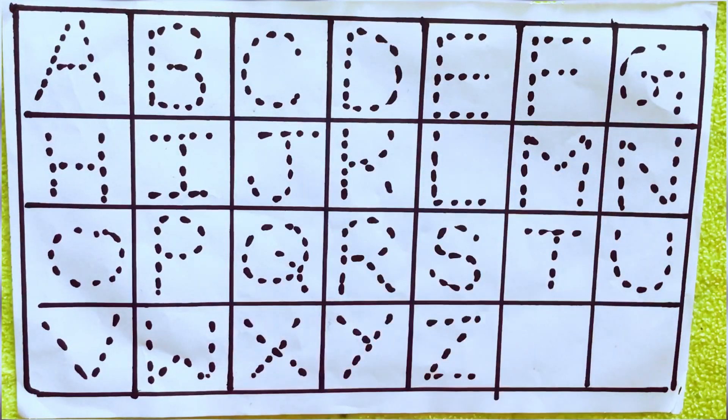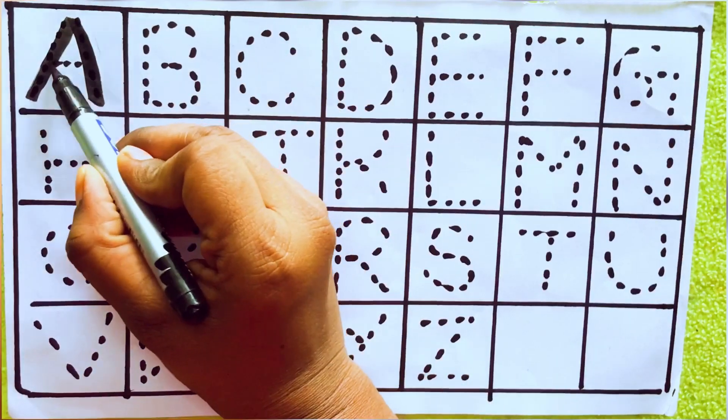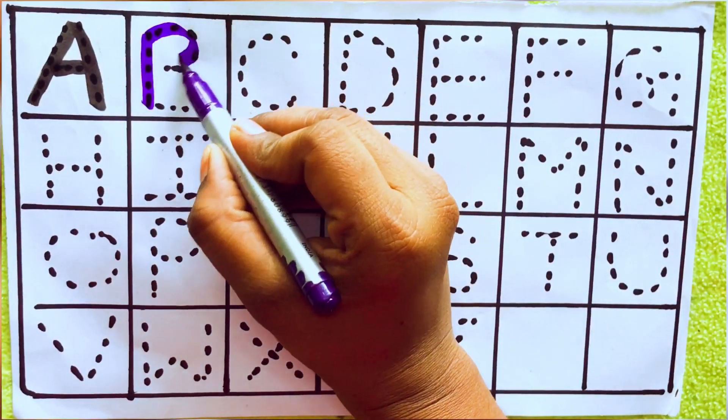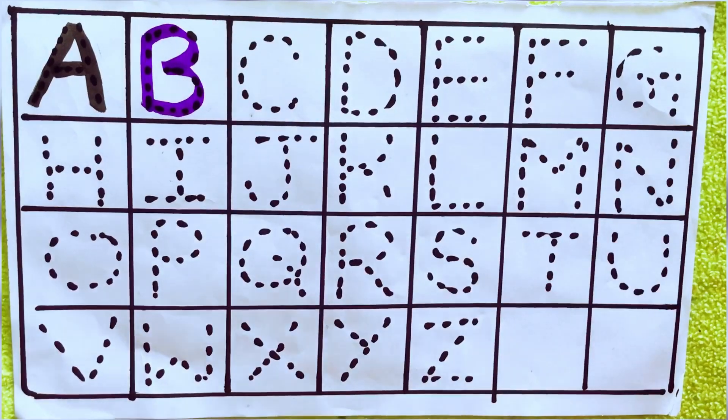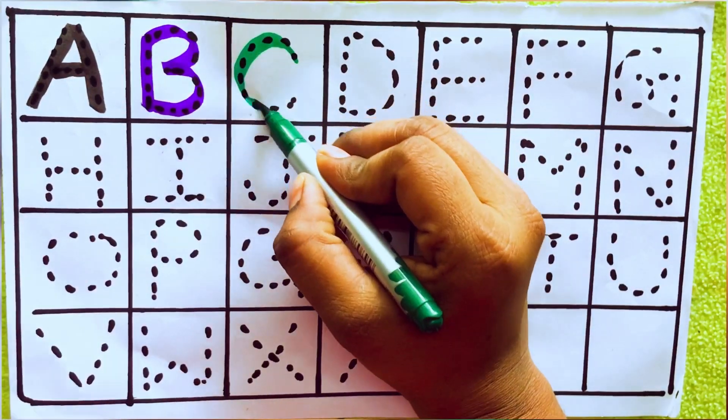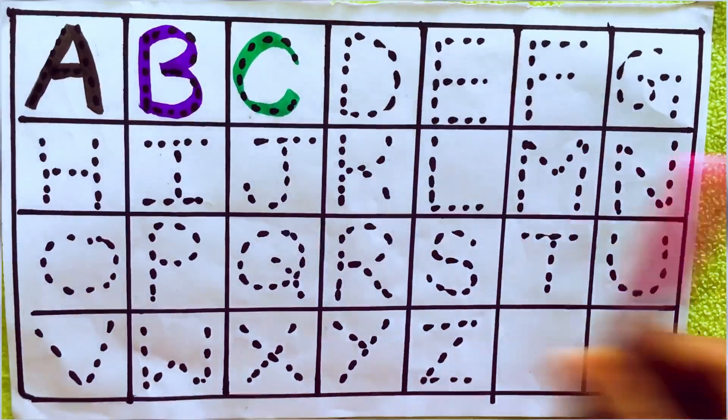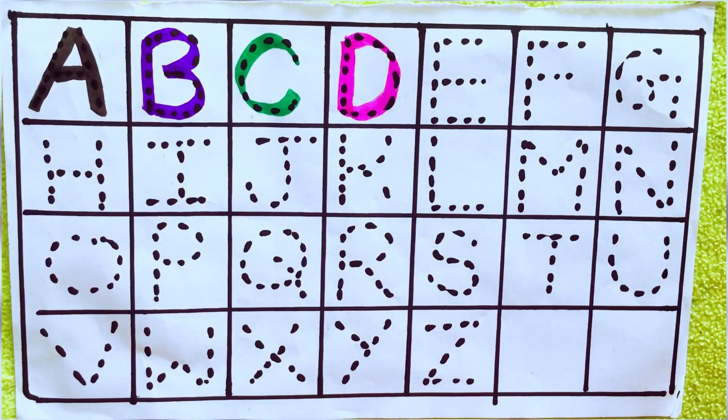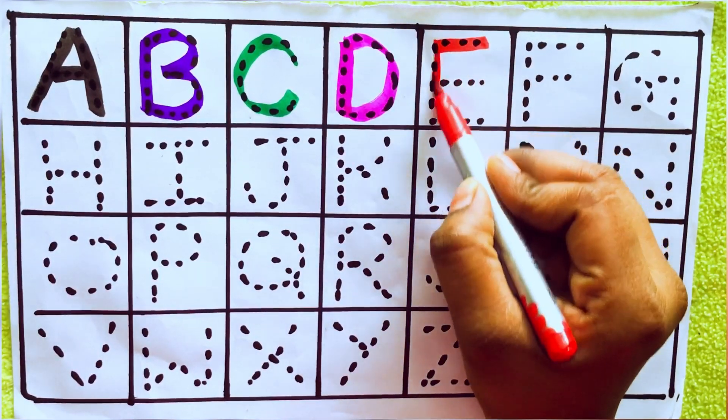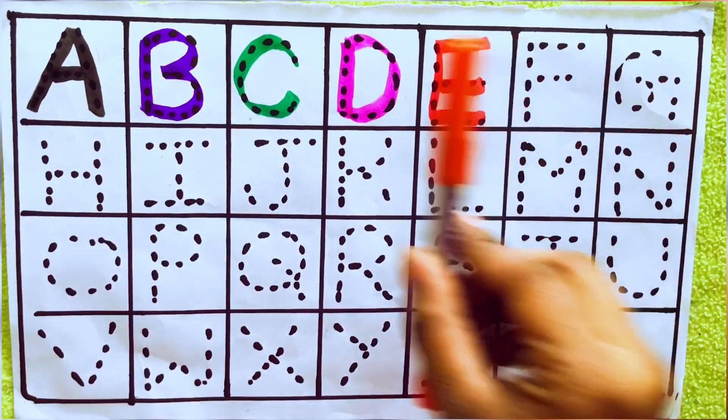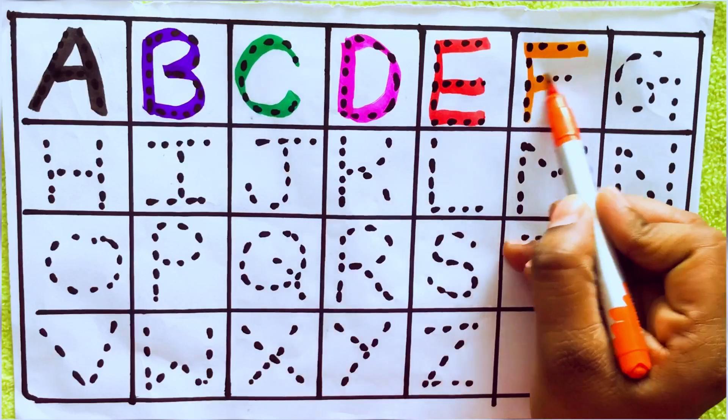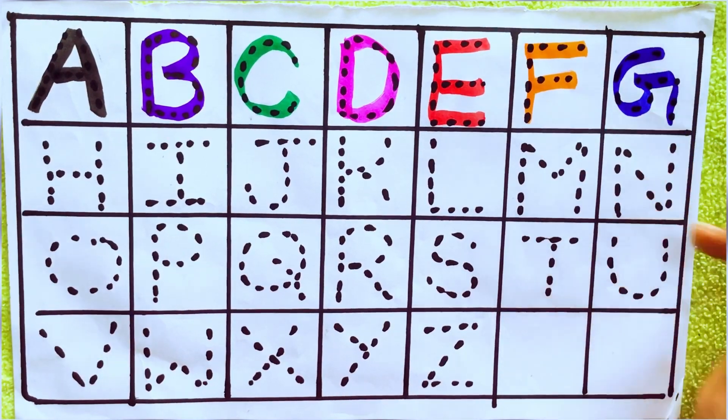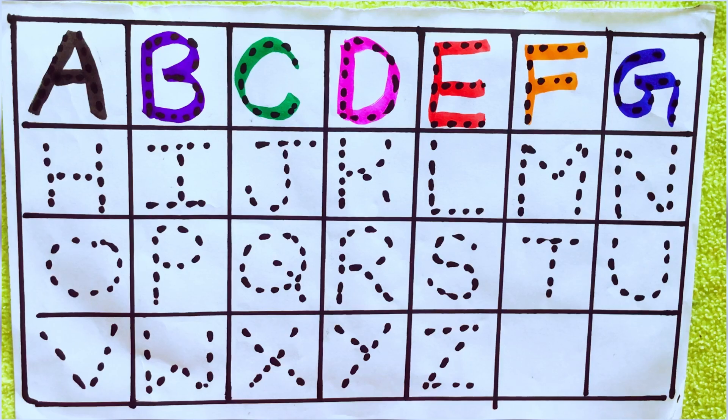Let's know alphabets. Black color A, A for apple. Violet color B, B for ball. Green color C, C for cat. Pink color D, D for dog. Red color E, E for egg. Orange color F, F for fish. Blue color G, G for goat.